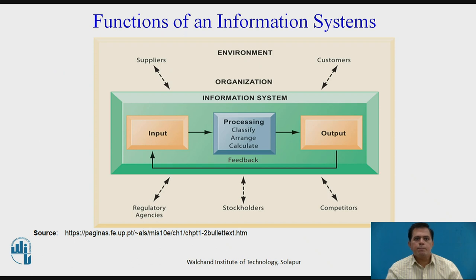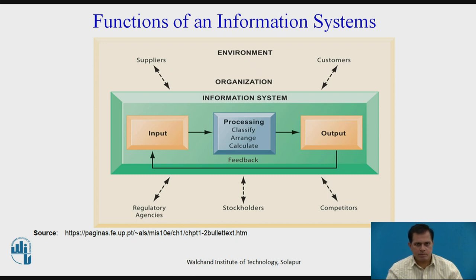This is a very important diagram which shows the functions of an information system, showing all the components. The first component is Input, the second is Processing — classify, arrange, calculate — and the third is Output. In this environment, we give the example of the relationship between supplier and customer, where the organization follows different kinds of functions to generate an information system.